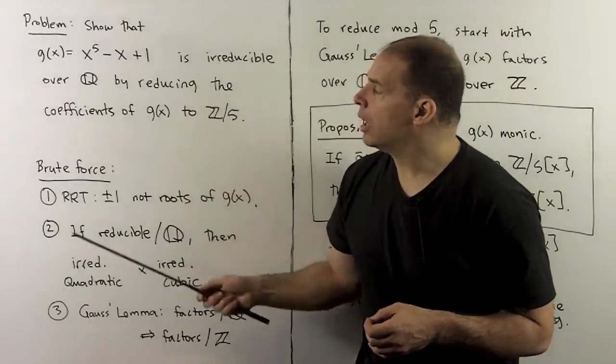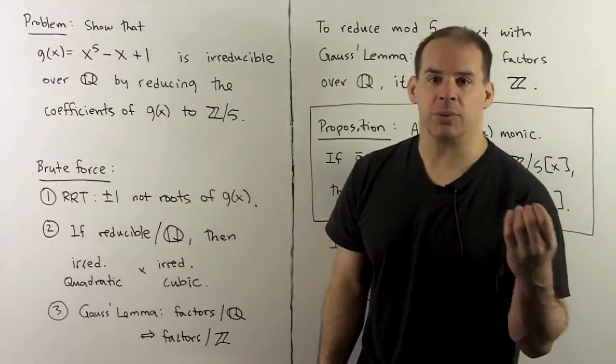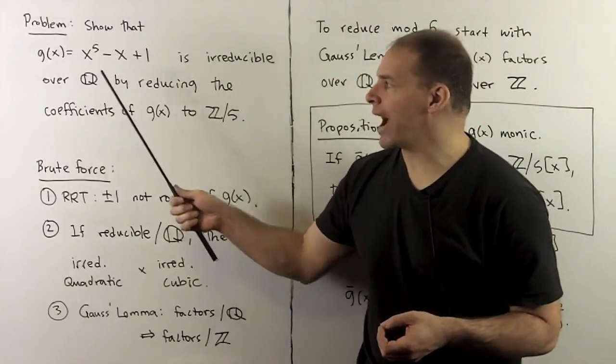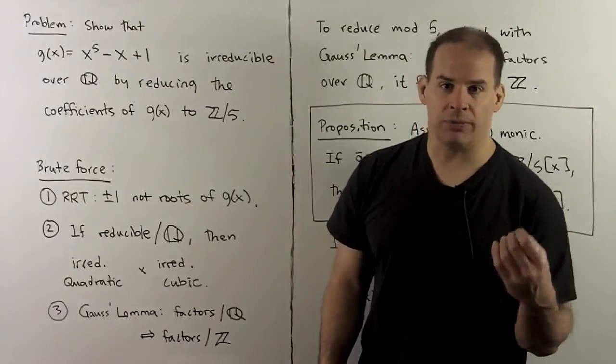Now, the problem: I want to show that g(x) equal to x to the fifth minus x plus one is irreducible over the rationals by reducing the coefficients modulo five.